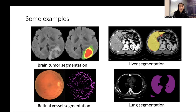Currently, UNet is still one of the most powerful architectures for image segmentation. It has been used on many tasks, especially medical image segmentation, such as brain tumor segmentation, liver segmentation, retinal vessel segmentation, and lung segmentation. If you are interested in any applications of UNet for medical image analysis, you can search for papers to get more detailed information.